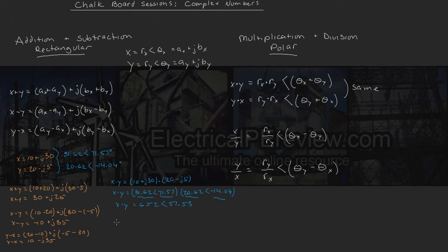Now, how about, let's do x divided by y. We're going to use our polar form, since we already have them, and we're going to do x is 31.62 at an angle of 71.57 degrees, divided by y, which is 20.62 at an angle of negative 14.04 degrees. We're going to divide these magnitudes up here, and then we're going to be subtracting our phase angles, since we're doing division. So we carry that out,